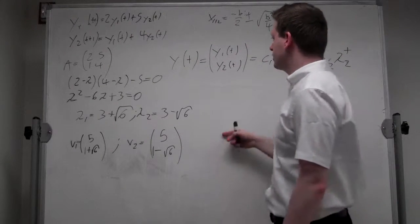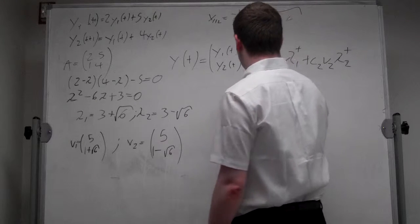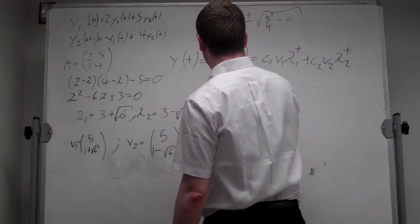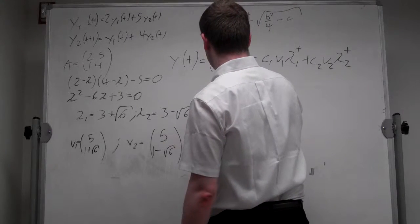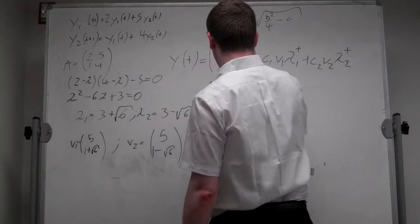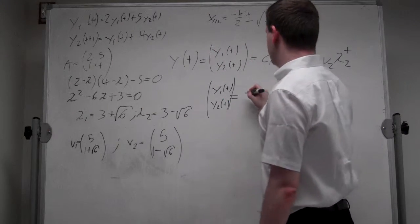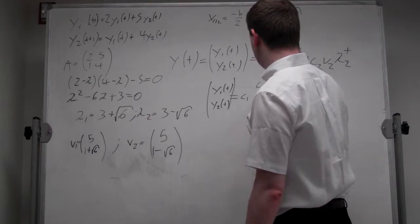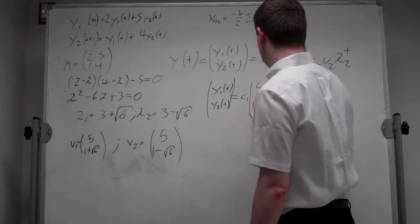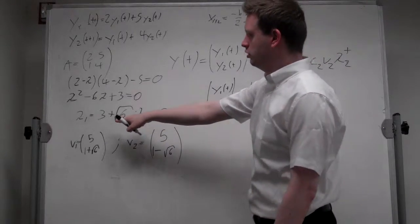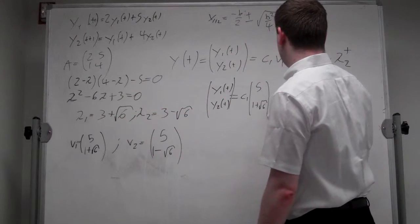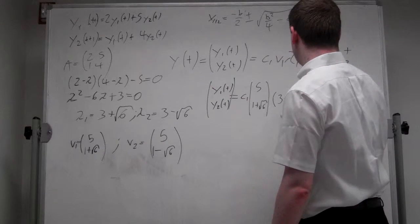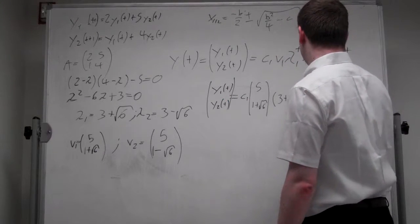Okay, so we can plug it into this formula here, where we get y_1t, y_2t will be equal to some constant c_1 times the first eigenvector 5, 1 plus square root of 6, times lambda_1, so 3 plus square root of 6 to the t,